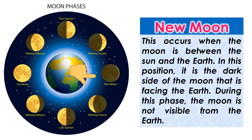New moon. This occurs when the moon is between the sun and the Earth. In this position, it is the dark side of the moon that is facing the Earth. During this phase, the moon is not visible from the Earth.